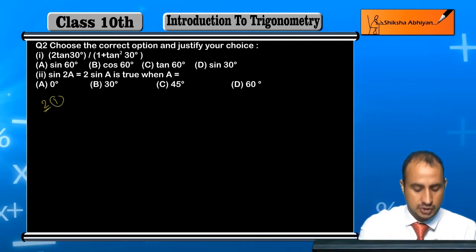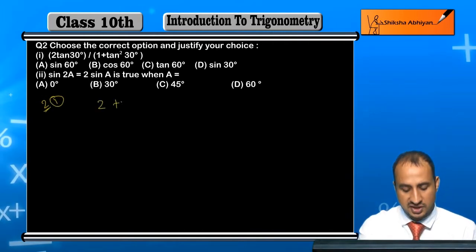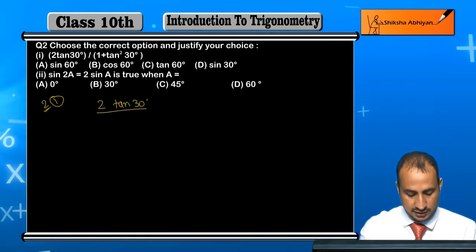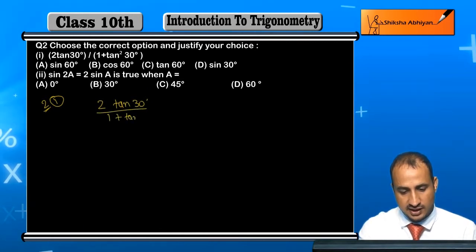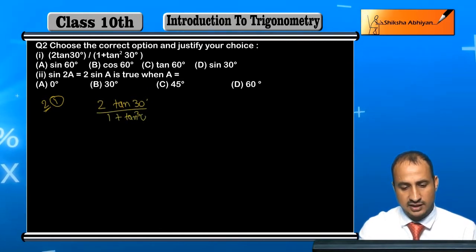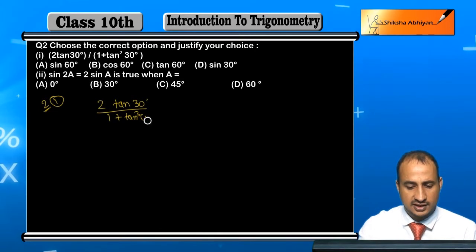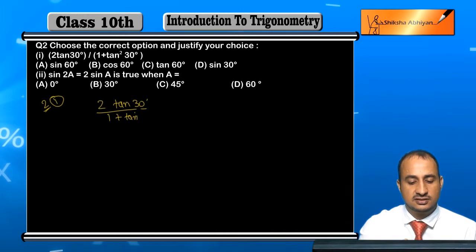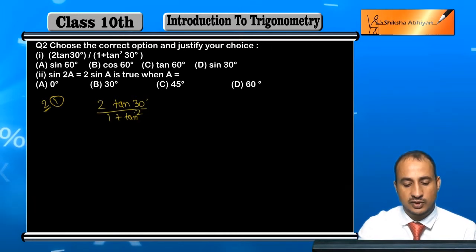In the first part, we have 2tan30° upon 1 plus tan²30°. We need to find the value of this expression: 2tan30° divided by (1 + tan²30°).